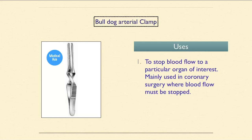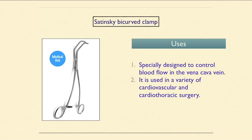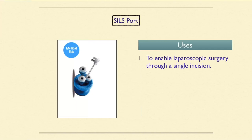The bulldog arterial clamp is used to stop blood flow to a particular organ of interest, mainly in coronary surgery. The Satinsky bicaval clamp is specially designed to control blood flow in the vena cava and is used in a variety of cardiovascular and cardiothoracic surgeries. The Silport is used to enable laparoscopic surgery through a single incision.